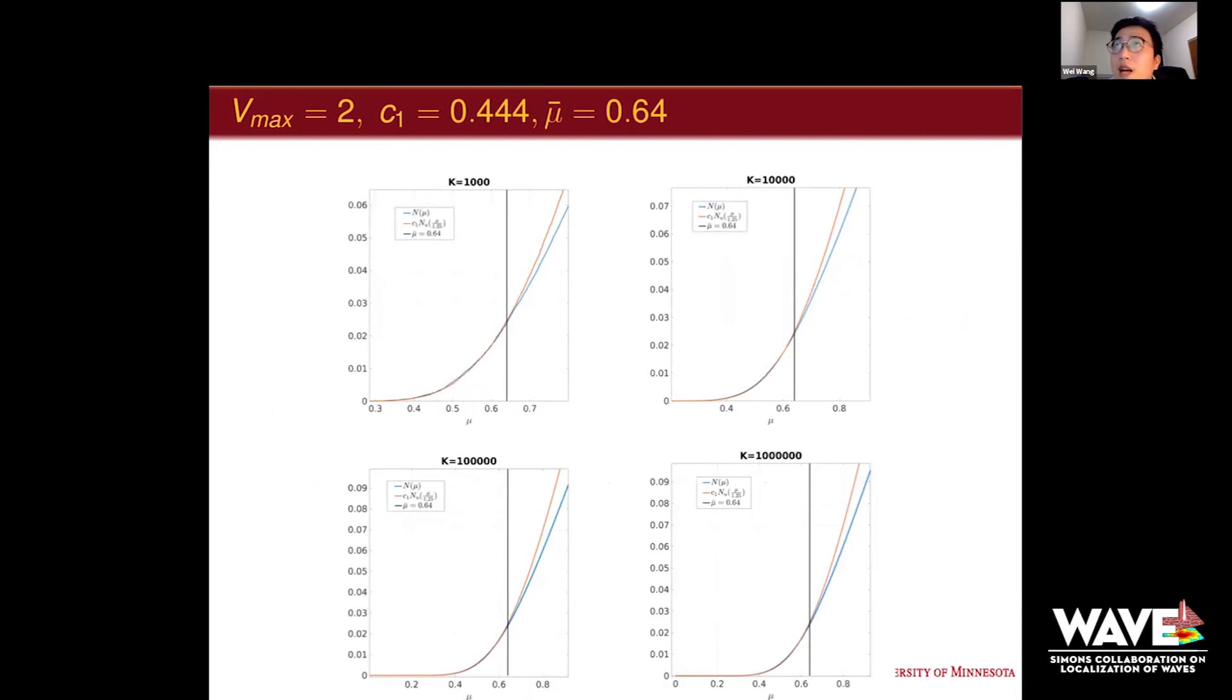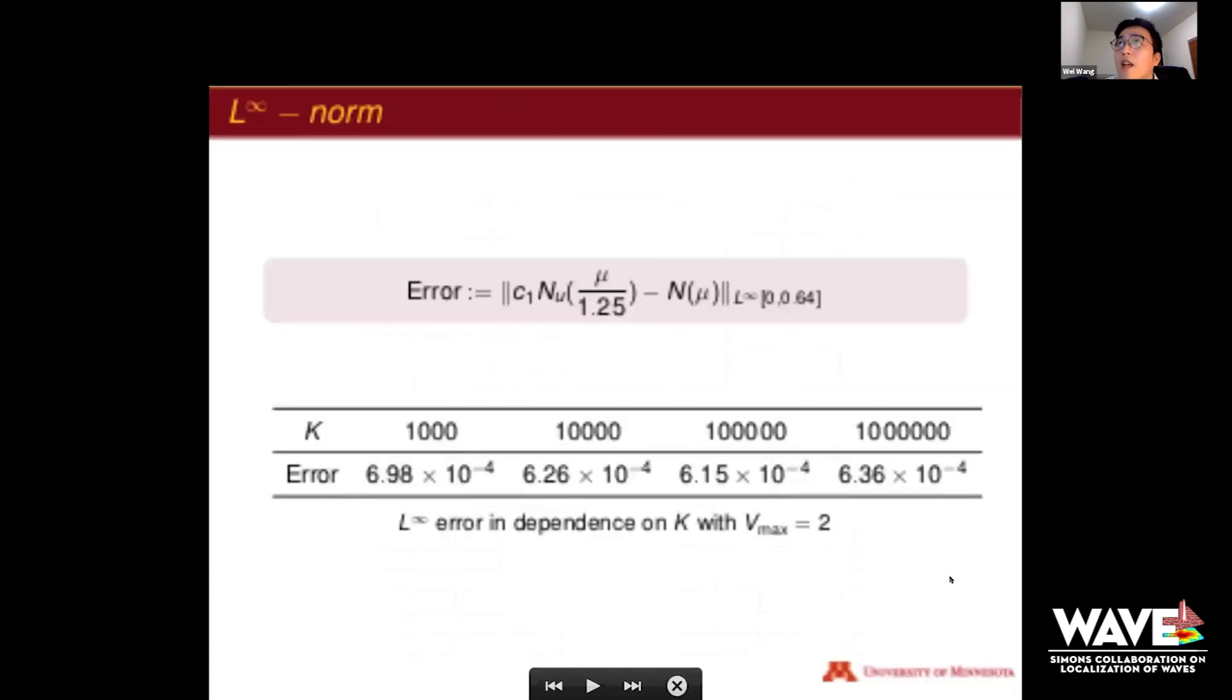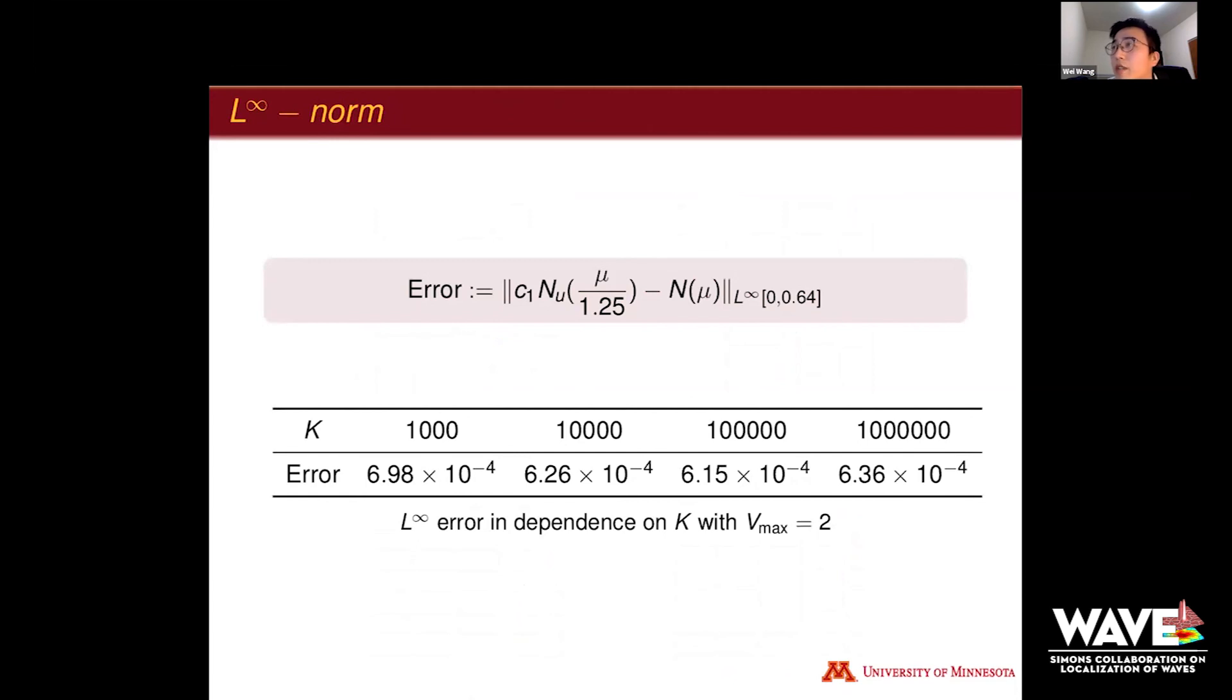After that, we try another V_max, a bigger V_max equal to two. We choose a similar scaling constant, 0.444, very close to what we used before 0.448. μ_bar here is different, 0.64, which is twice what we used before 0.32, because we just doubled V_max. We find everything kept the same, and the good matching stopped at the vertical line, μ_bar equals 0.64. So that means the constant is linearly, roughly speaking, dependent on V_max. For different size k, from 1,000 to 1 million, it's almost kept the same. This is the detailed data for the infinity norm for V_max equal two with different size k, at the same levels tending to 10^-4.